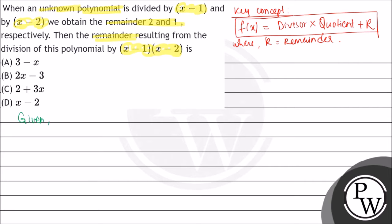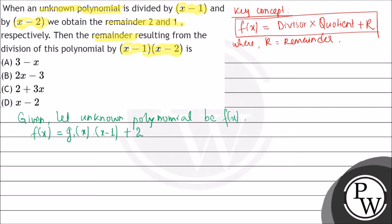In the question it is mentioned that there is an unknown polynomial, so let the unknown polynomial be f of x. When the unknown polynomial is divided by x minus 1, the remainder is 2, so we write: f of x equals g1(x) times (x minus 1) plus 2. Consider this equation 1. Similarly, when divided by x minus 2, the remainder is 1, so f of x equals g2(x) times (x minus 2) plus 1. That is equation 2.